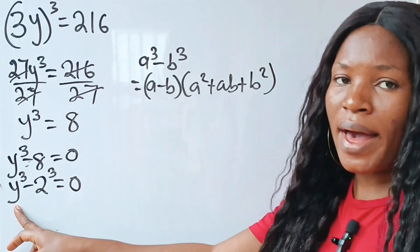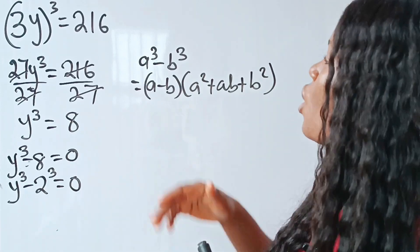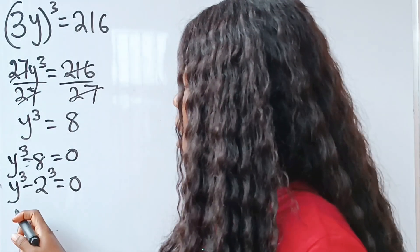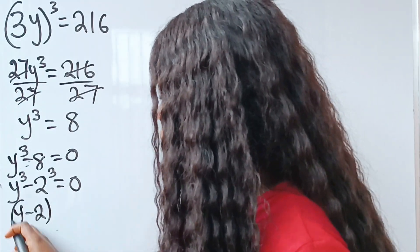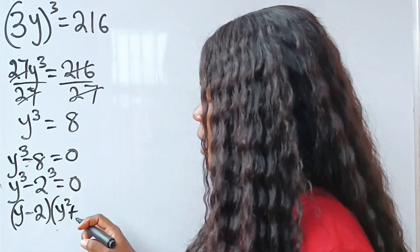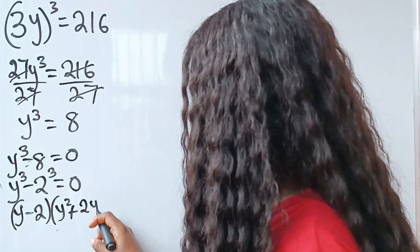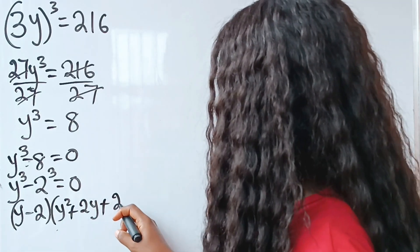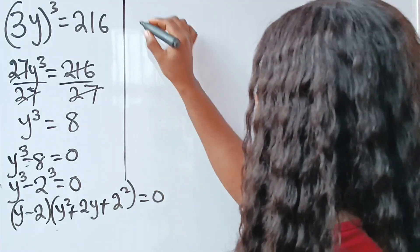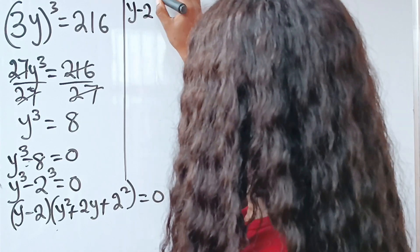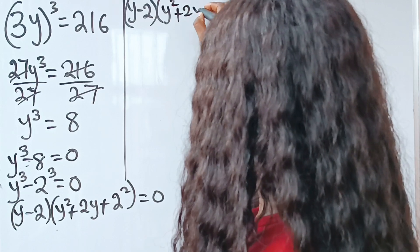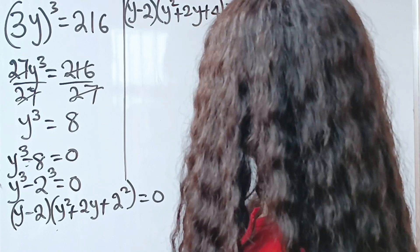In this case a is equal to y and b is equal to 2. So we substitute that in: (y minus 2) multiplied by (y² plus 2y plus 2²) equals 0, which gives us (y minus 2)(y² plus 2y plus 4) equals 0.